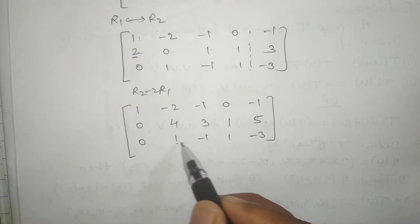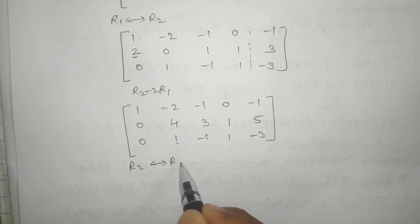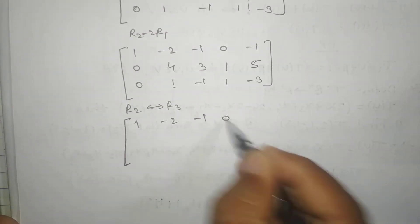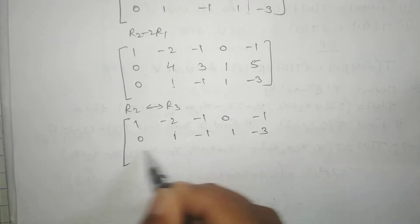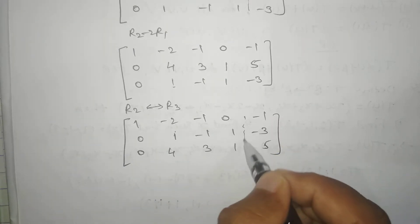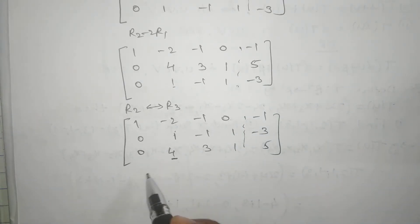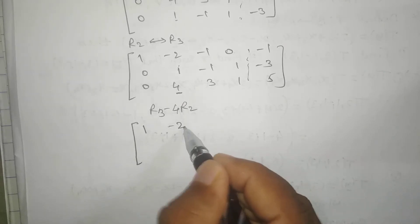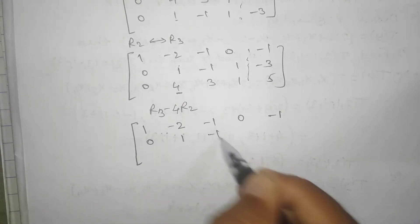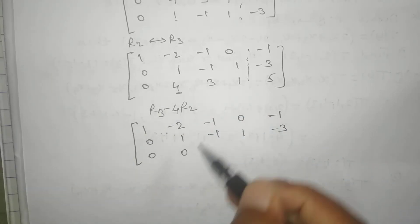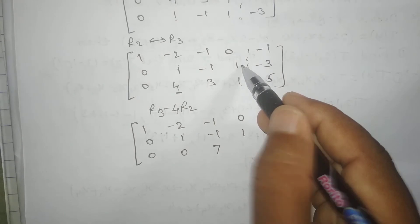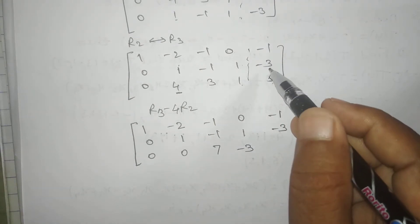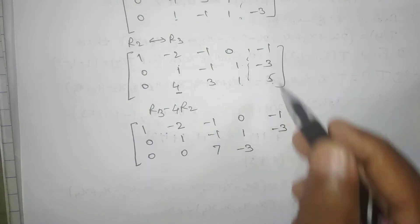To make the next pivot position zero, interchange R2 and R3 to get [1, -2, -1, 0 | -1; 0, 1, -1, 1 | -3; 0, 4, 3, 1 | 5]. Then apply R3 minus 4 times R2 to get row three as [0, 0, 7, -3 | 17], giving the row echelon form.